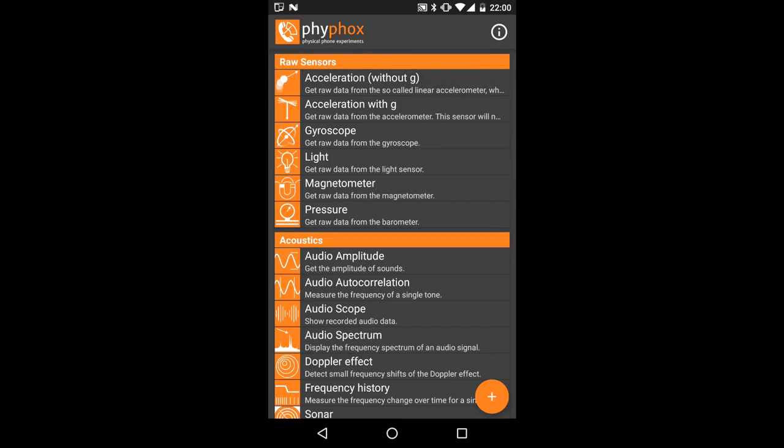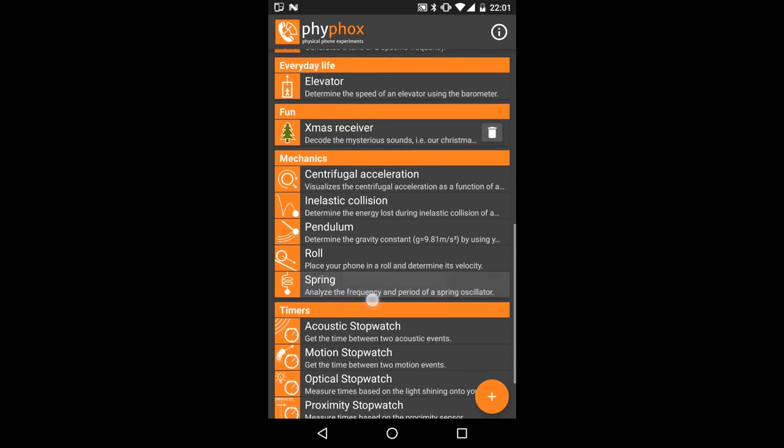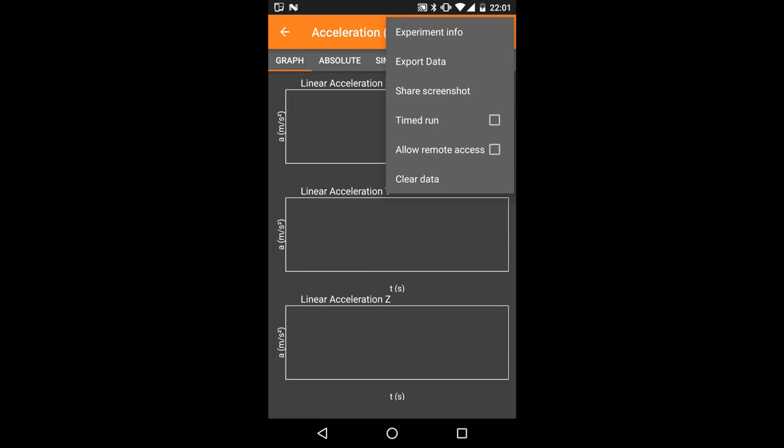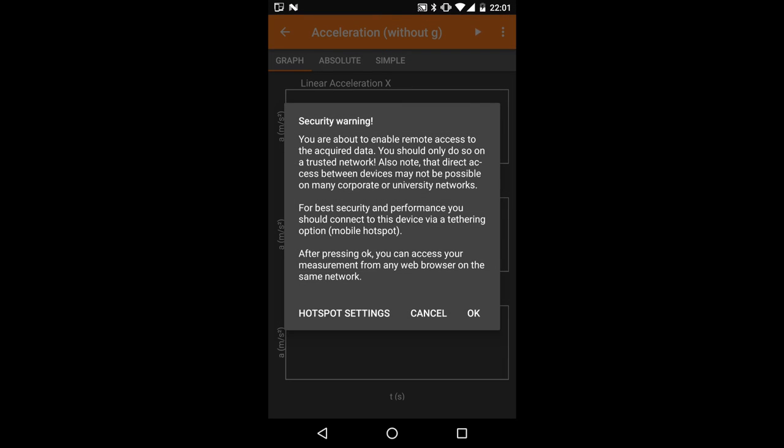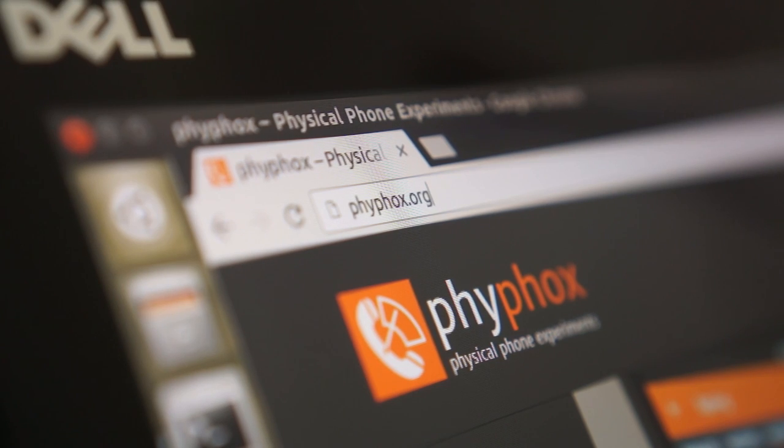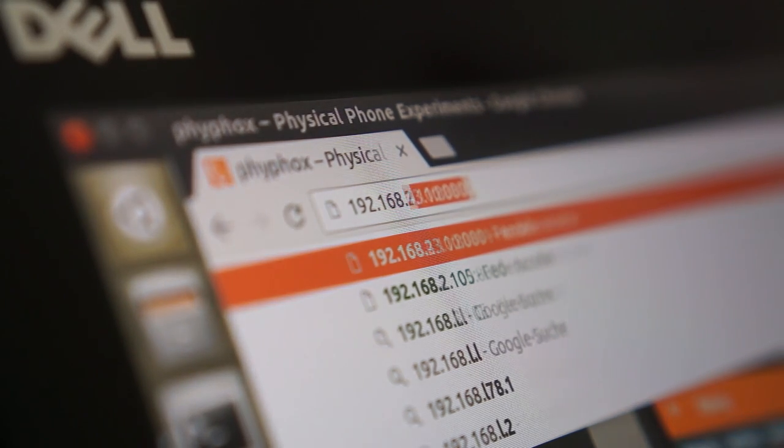For most experiments in this video you should use either the spring experiment or just the raw accelerometer data. To set up the remote interface select this function from the menu and confirm the warning. At the bottom of the screen you will see an address, which you just have to enter in the address bar of a web browser on your second device. If you have trouble with this step, check out VFOX.org for more detailed instructions.